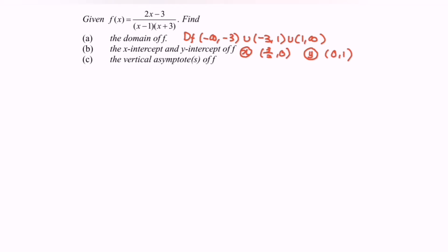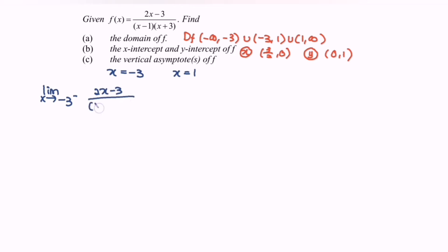Now we are going to discuss the vertical asymptotes of f. Referring to the domain, we have two vertical asymptotes: x = negative 3 and x = 1. We will now discuss their behavior by evaluating one-sided limits. The limit as x approaches negative 3 from the left of f(x) = (2x - 3) / ((x - 1)(x + 3)).